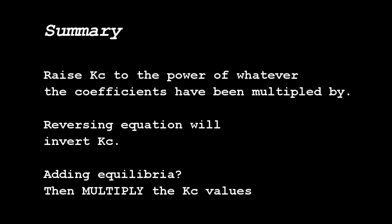In summary: raise Kc to the power of whatever the coefficients have been multiplied by. If you reverse the equation, you need to invert Kc. And if you're adding equilibria, multiply the Kc values together. And we're done.